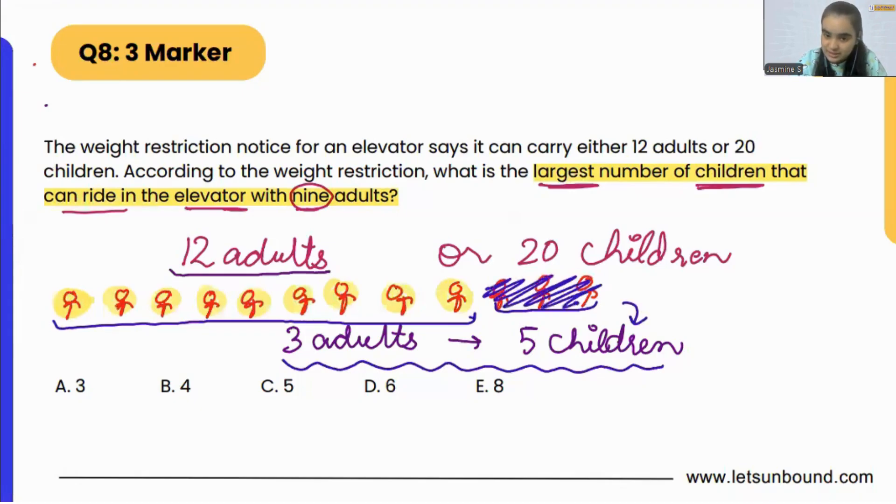So instead of these 3 adults, we can have 1, 2, 3, 4, 5 children. Why? Because 3 adults equals 5 children, so instead of 3 adults we can have 5 children.